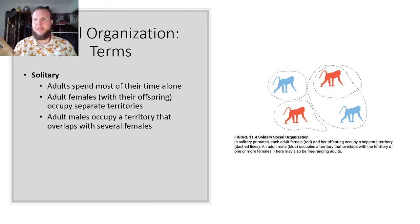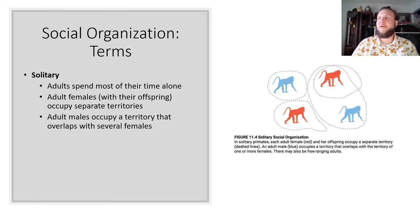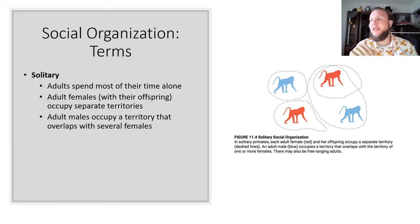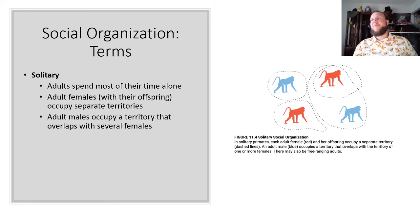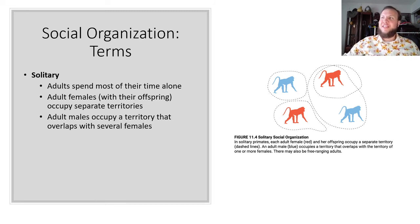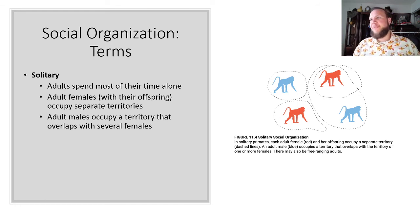Now we'll get into social organization. First is solitary: adults spend most of their time alone; adult females spend most of their time with their offspring collecting resources; adult males occupy a territory that overlaps with several females. Orangutans are an example — males are solitary, go off on their own, find a female, and their territories don't overlap with each other.